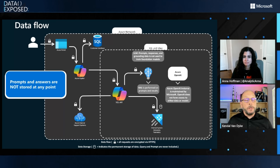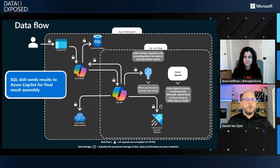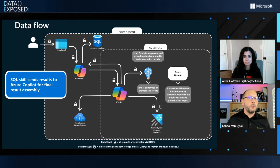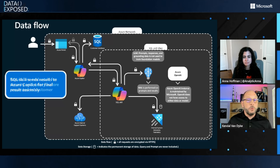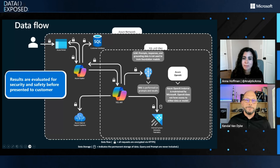Once the SQL skill has figured out the best answer to the question, we then send the results back to Azure Copilot for final assembly. We do a couple of things here: we check for accuracy, and we also check to make sure that the results are not something harmful or giving you bad advice, or telling you something that would otherwise violate our principles of Azure Copilot. Then your results are sent back to you and presented, at which point you can either accept the results, ask more questions, and rinse and repeat. That's awesome — it's pretty cool how many things are happening in a very secure fashion in just a couple of seconds. My next question is: what model is SQL Copilot using?